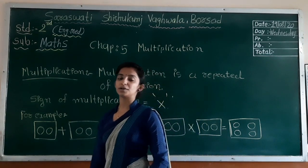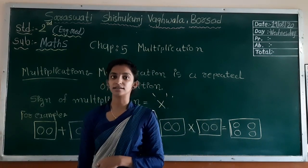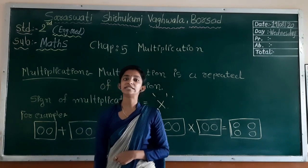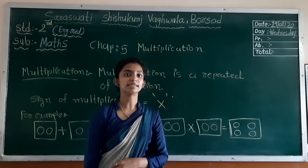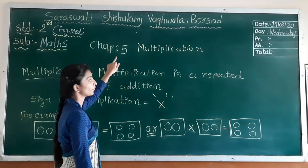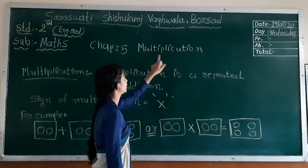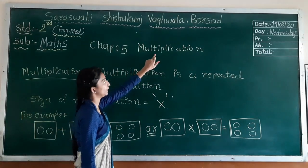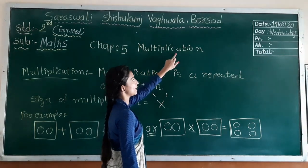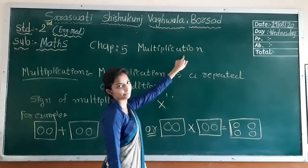We have already completed our chapter number 4, which name is suppression. Now today we will learn a new chapter, which name is multiplication. Chapter number 5 — multiplication. M-U-L-T-I-P-L-I-C-A-T-I-O-N. Multiplication.